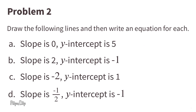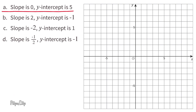Problem 2: Draw the following lines, and then write an equation for each. Part A: slope is 0, y-intercept is 5. I'll start by plotting the point for the y-intercept at 5 on the y-axis. And since the slope is 0, it's just a horizontal line that runs through the y-intercept at 5.